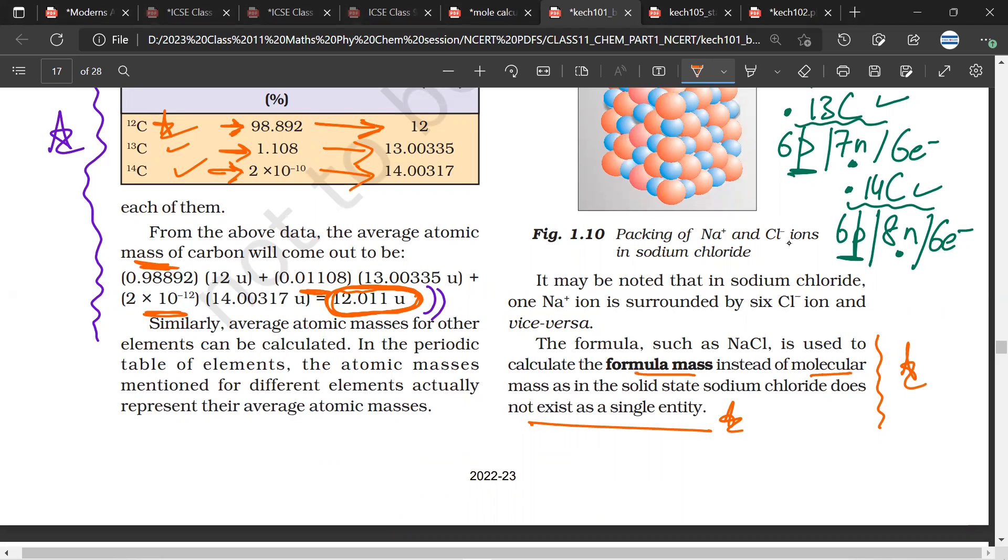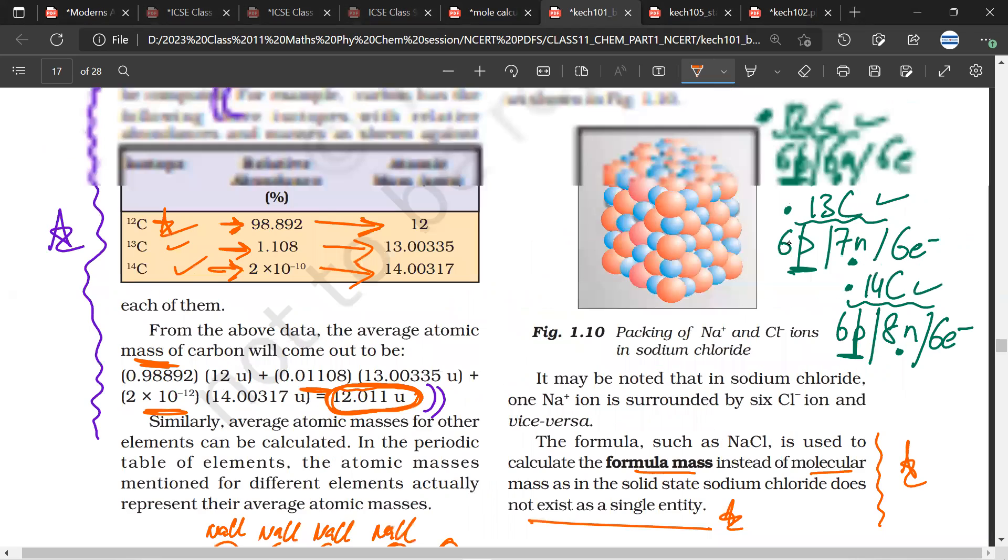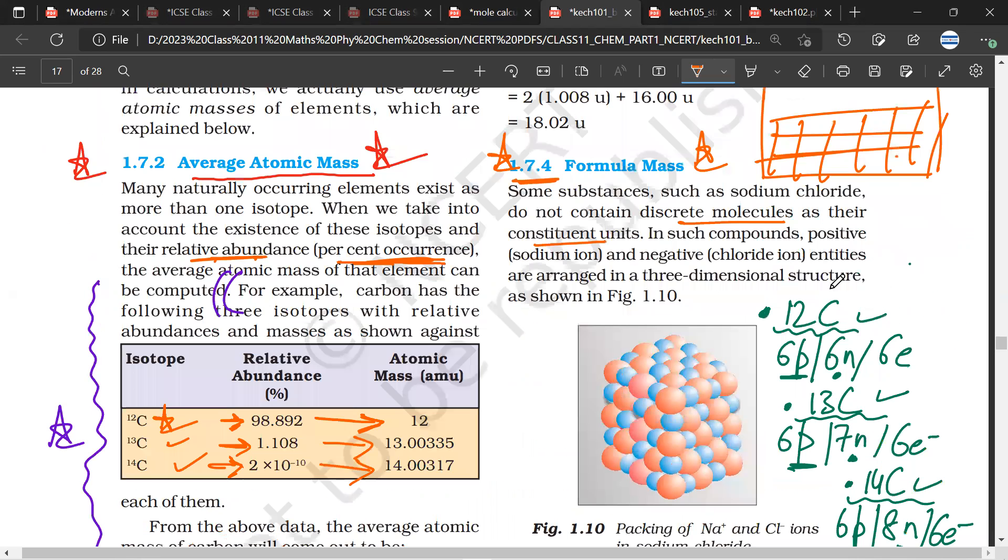You won't have separate entities of NaCl. That is why, when we are dealing with ionic compounds, usually the word that is used is formula mass.